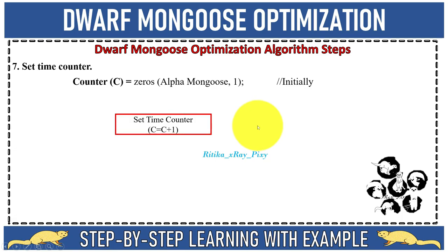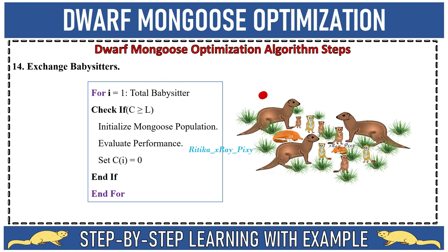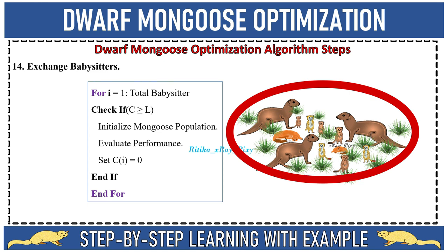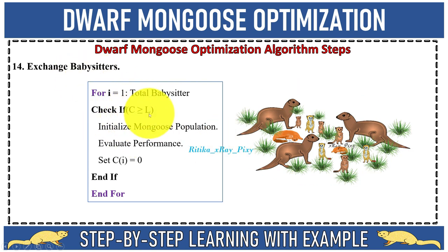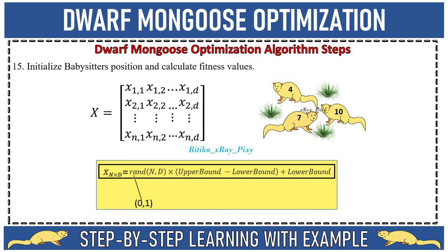Now we increment counter c by 1 and proceed to the babysitter exchange phase. When mongoose move from one sleeping mound to another or from one foraging site to another, the distance covered by the group depends on group size, young mongoose, predators, and intruders in the path. We check the counter against the babysitter exchange rate l. Then we initialize new positions and evaluate performance. The babysitter exchange sets out a new exploitation phase followed by exploitation until evening when the group returns to the new sleeping mound.